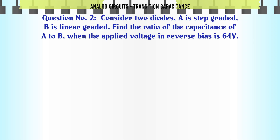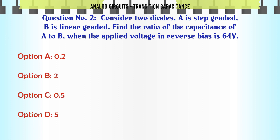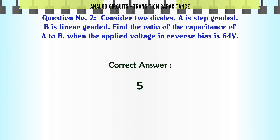Consider two diodes: A is step graded, B is linear graded. Find the ratio of the capacitance of A to B when the applied voltage in reverse bias is 64V. A: 0.2, B: 2, C: 0.5, D: 5. The correct answer is 5.